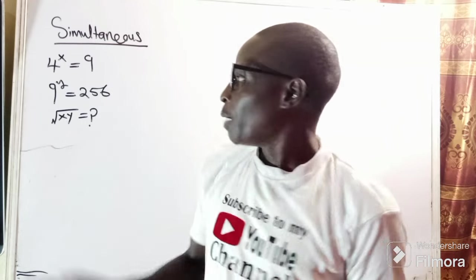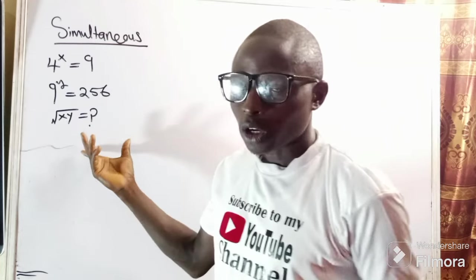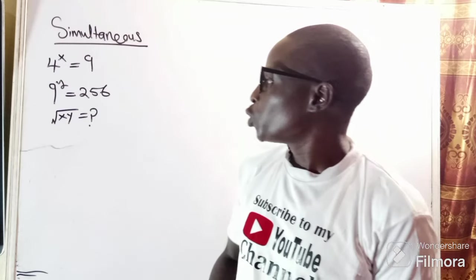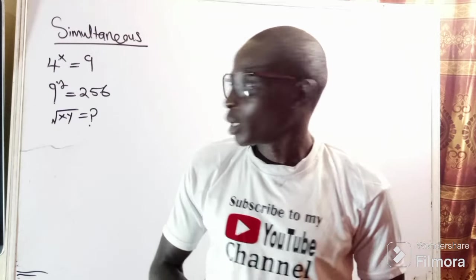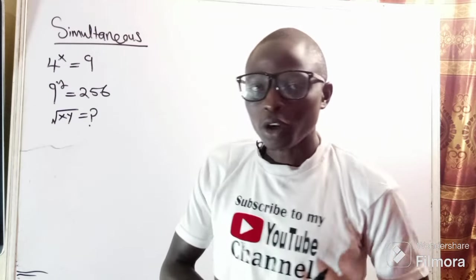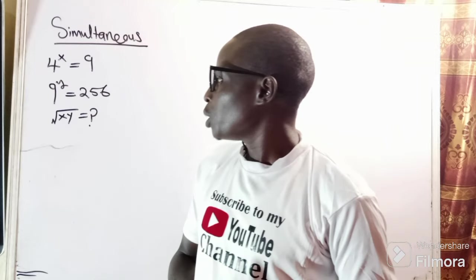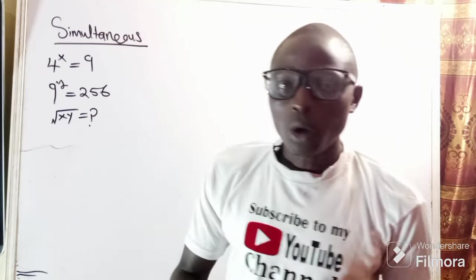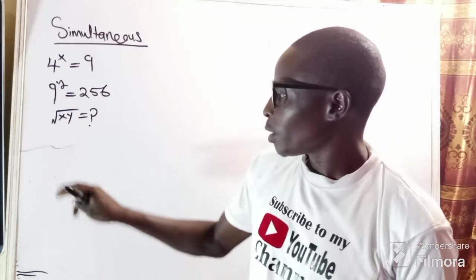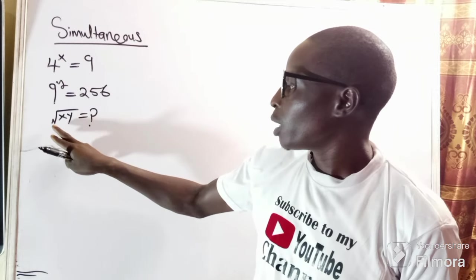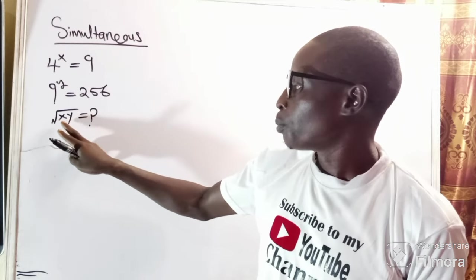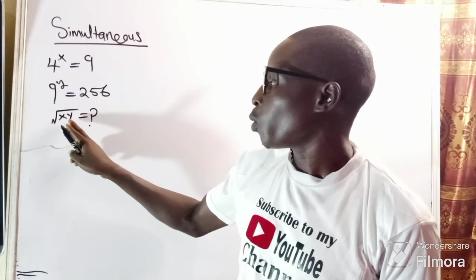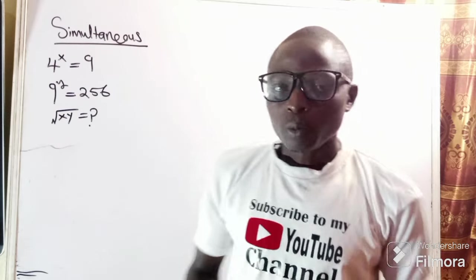Today, as usual, we are going to consider this simultaneous equation. We have an equation that says 4 to the power of x equals 9. The second equation says 9 to the power of y equals 256. Our mandate is to find the square root of the product xy.